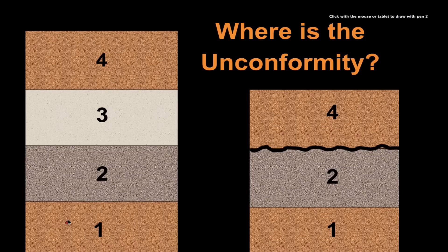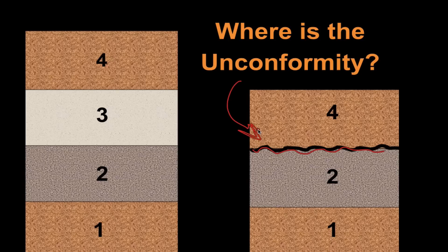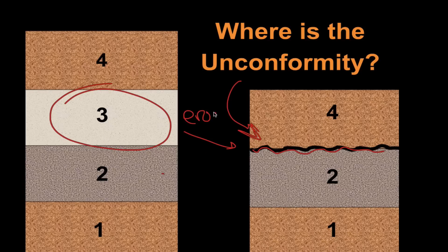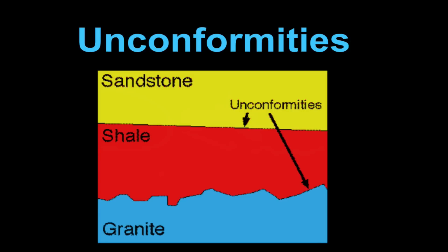If we look for that unconformity, notice our rock layers are already layered for us — oldest on the bottom by the principle of superposition: one, two, three, four. Over here we have one, two — where's three? It must have been eroded away, then four. Anytime we see a wavy line like this in between rock layers, that means there's an unconformity there. We can see that layers two and one are the same, but this lighter colored layer — it looks like a sandstone — was eroded away, and that's what formed our unconformity.